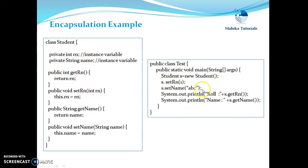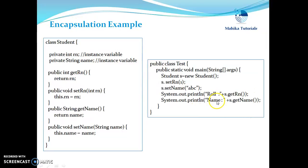So how can this be achieved in class Test? If class Test has to access these data members, it can be done by calling the getters and setters. We create an instance of the Student class and then call the setters to set roll number and name, and then call the getters to get the values of roll number and name. This is how we can hide the data from outside code by keeping it private and providing getters and setters to make it accessible.